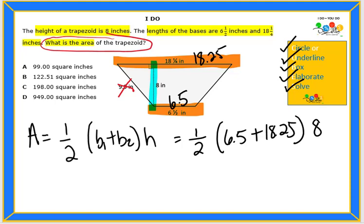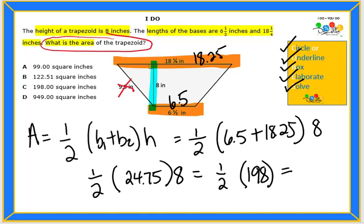When we add our bases we end up with 24.75 times 8 and we still need half of that. When we multiply 24.75 times 8 we end up with half of 198. When we look for half of 198 which means we divide by 2, our final answer is 99 inches squared.